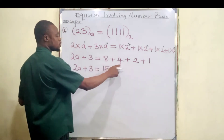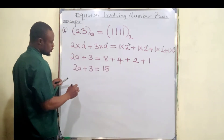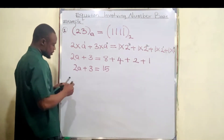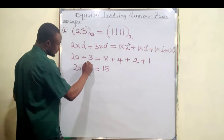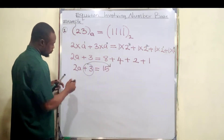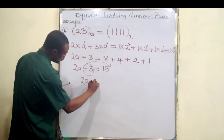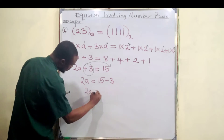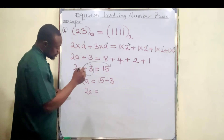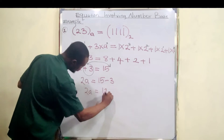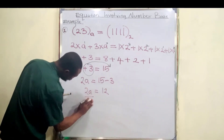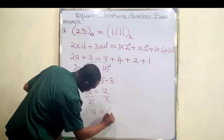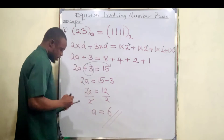So we have 2a + 3 = 15. Moving 3 to the right-hand side: 2a = 15 − 3 = 12. Dividing both sides by 2, this 2 cancels that 2, and a = 6. So a = 6 is the answer to the second question.